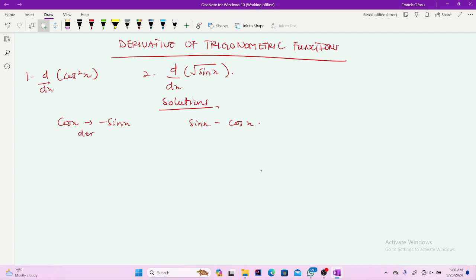So derivative of cos x maps to negative sin x. Derivative of sin x maps to cos x. Using these two, we can move ahead and find our derivatives here.